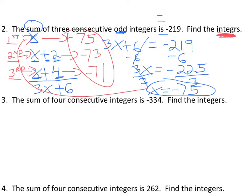And if you check it, if you add negative 75, negative 73, negative 71. All right, so if you added all three of those, it equals negative 219. And you know you did the problem correctly.